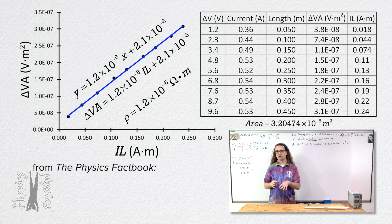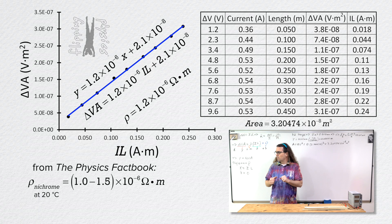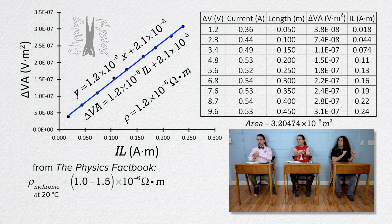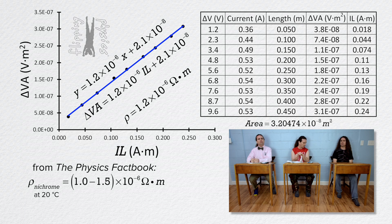According to the Physics Factbook, the resistivity of nichrome at 20 degrees Celsius is in the range of 1.0 to 1.5 times 10 to the negative 6 ohm meters. The physics works! Mr. P keeps the classroom at 68 degrees Fahrenheit in the winter, which is the same as 20 degrees Celsius, so the temperature condition is confirmed.